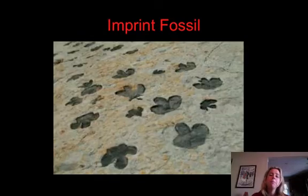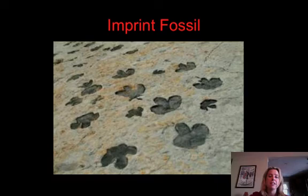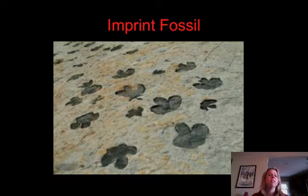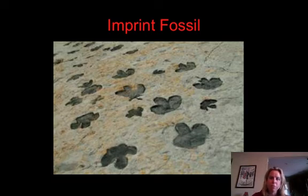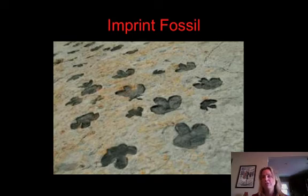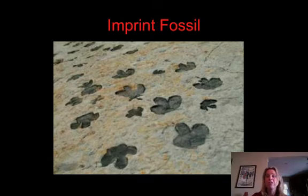Finally, you have imprint fossils, which are just like they sound — footprints and that type of stuff. A lot of people think those are the most boring, but you can learn a lot about organisms from imprint fossils. For example, did they travel in groups? Did they take care of their young? If you have big ones with little ones, what size clutches did they have — a lot of babies or just one at a time? So you can learn a lot of behavioral things from imprint fossils. This picture was actually taken from Dinosaur Ridge, right up I-70, so you should check it out — it's pretty cool.